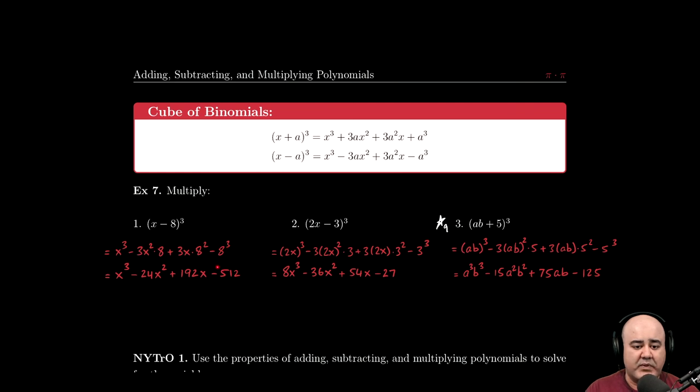And then this is now just the arithmetic. x³ comes along, 3 times 8 is 24, so we get negative 24x². 3 times 8², which is 64, is 192x. And then 8³ is 512.